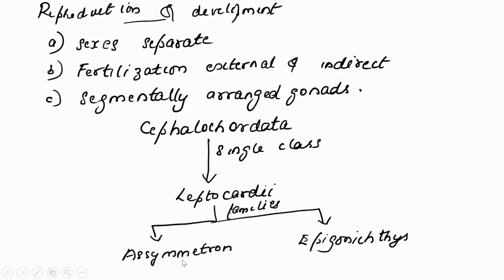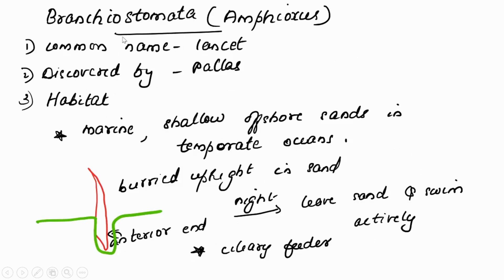Regarding classification: Cephalochordata has only a single class, Leptocardii. This Leptocardii is further divided into two families: Asymmetron and Epigonichthys.